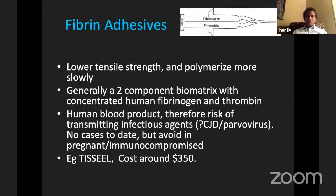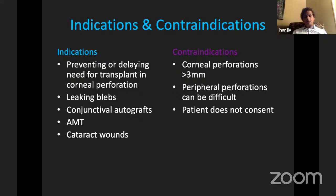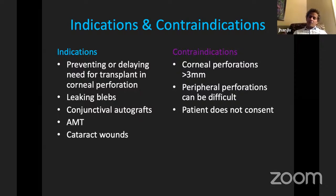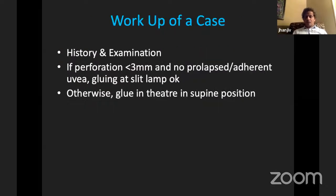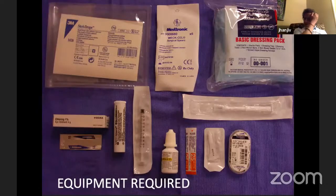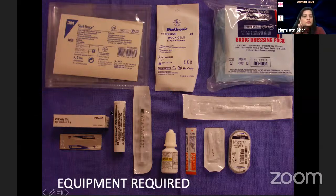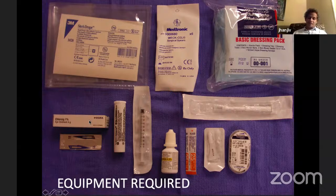Synthetic cyanoacrylate adhesive is commonly used for gluing — it has high tensile strength and possible bacteriostatic action. Fibrin glue is biodegradable and available but has low tensile strength and is expensive. About one-third of glued patients will not need subsequent surgery depending on perforation location and systemic treatment. The gluing procedure requires: chloramphenicol ointment, a number 11 blade, cyanoacrylate glue, tuberculin syringe, bandage contact lens, and vex-cell sponges.